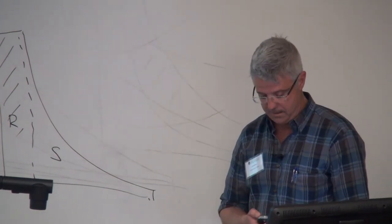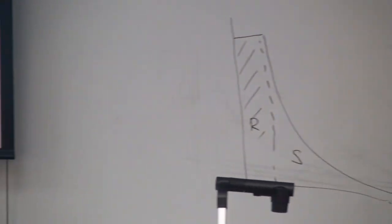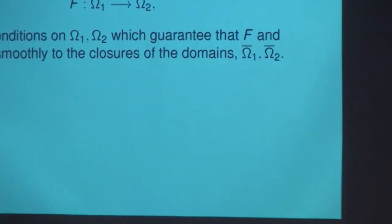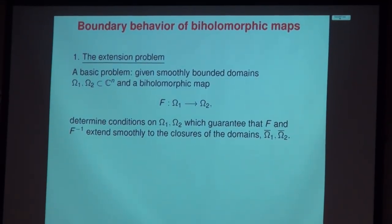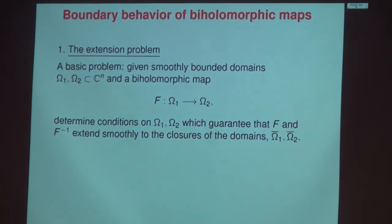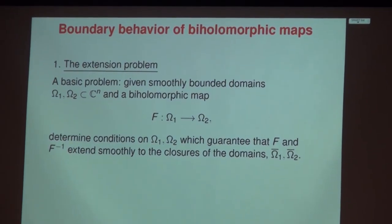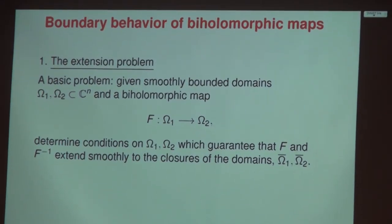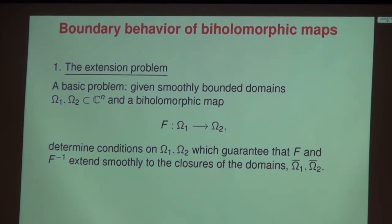The big problem that motivates what I'd like to talk about today is the bi-holomorphic extension problem in more than one variable. We have two given smoothly bounded domains and a bi-holomorphic map between them. The basic problem is to determine conditions on the two domains — boundary conditions of some kind, since they're indistinguishable as open sets — which guarantee that F and F-inverse extend smoothly to the closures of the domains. This problem phrased in this generality is certainly open.